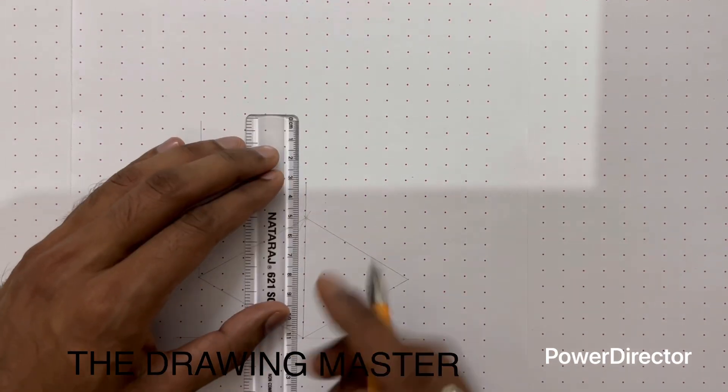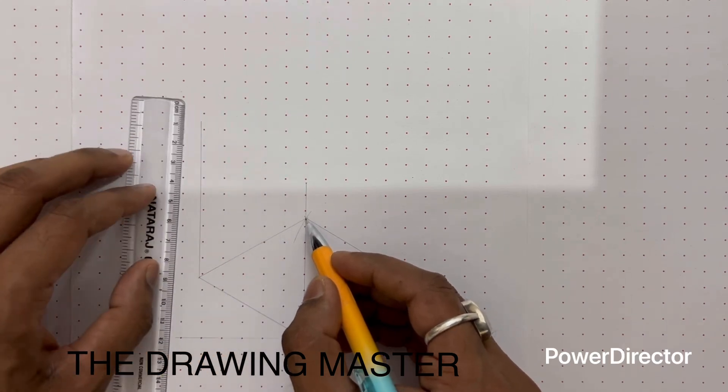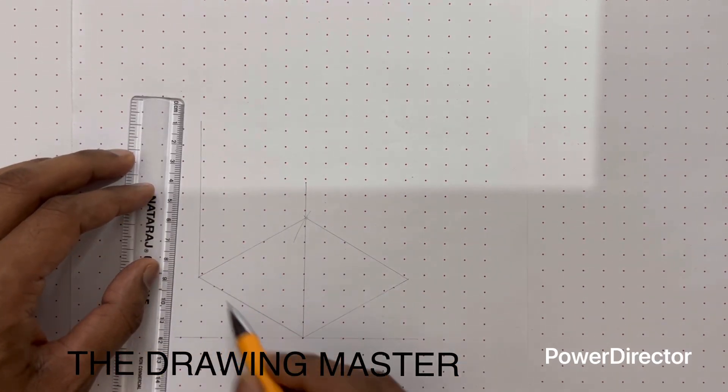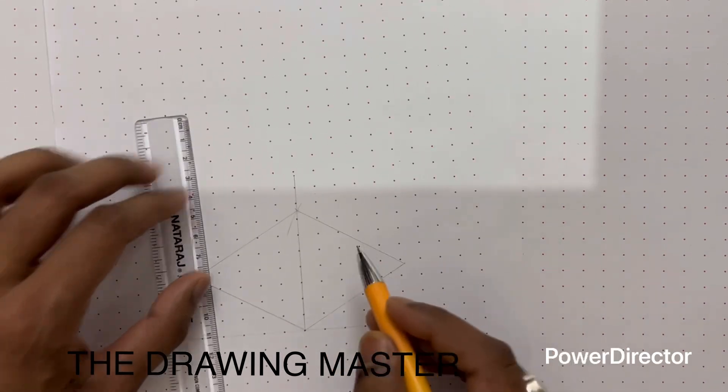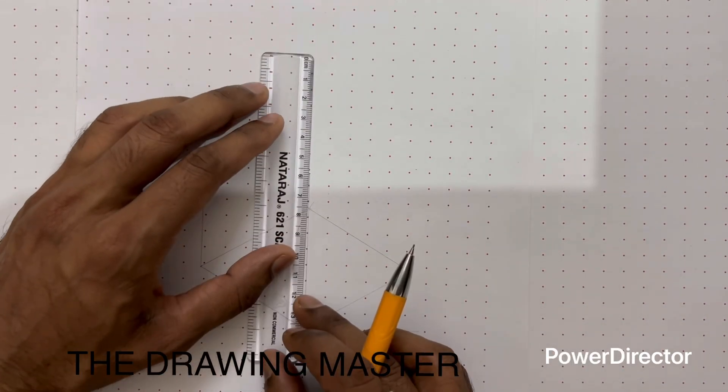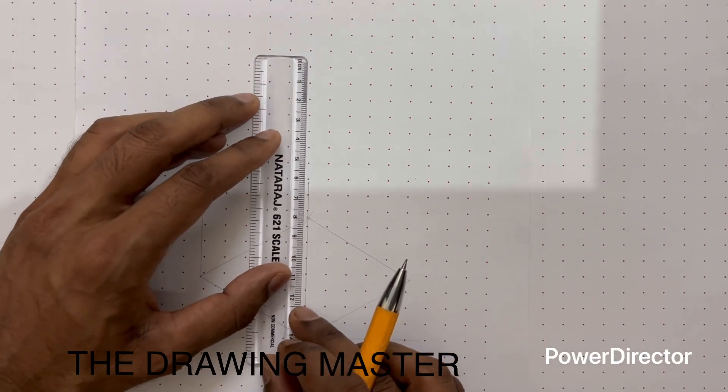Up to this point, up to this point it is 80. Now similarly from this third vertex, one two this is third and this is fourth. From all the four vertices you have to take the height of 80mm.